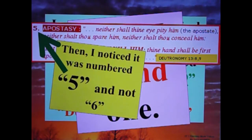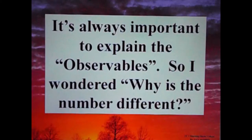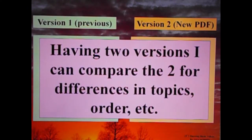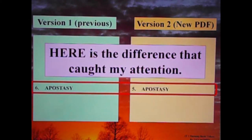Then I noticed it was numbered 5 and not 6. It's always important to explain the observables. So I wondered, why is the number different? Having two versions, I can compare the two for differences in topics, order, etc. In the previous version, which was text, apostasy was numbered 6. In the new PDF version I downloaded, apostasy is numbered 5.